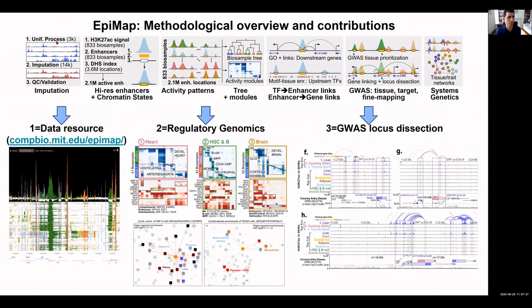In particular, he uniformly processed 3,000 different chromatin and RNA tracks, systematically imputed an additional 14,000 tracks, and carried out extensive QC and validation. This was followed by high-resolution annotation of enhancer regions based on enhancer chromatin states, H3K27 acetylation signal, and DNase hypersensitivity sites. He then built links from transcription factors to downstream target enhancers using motif enrichment, and from enhancers to target genes using correlated activity between RNA and epigenomics, integrating all data with GWAS to infer tissue, target, and variants underlying traits.